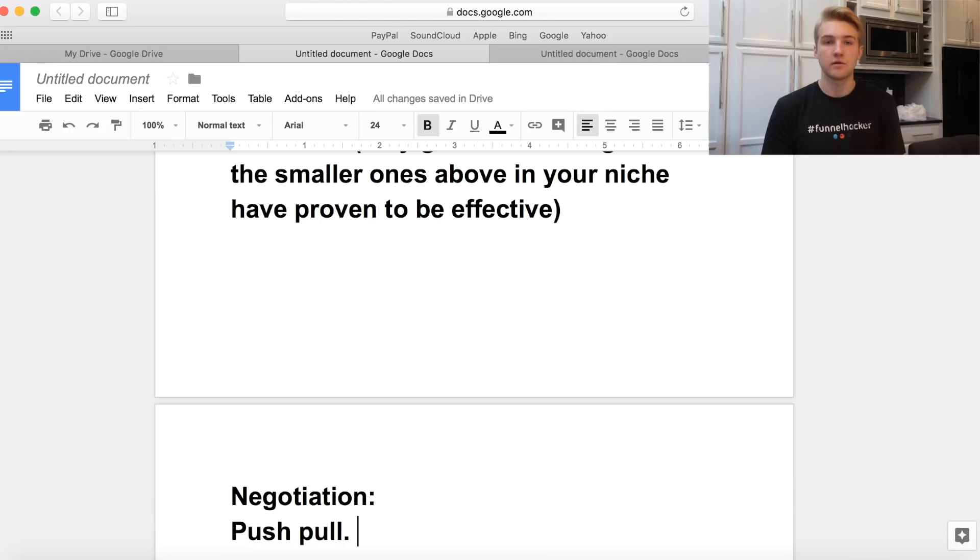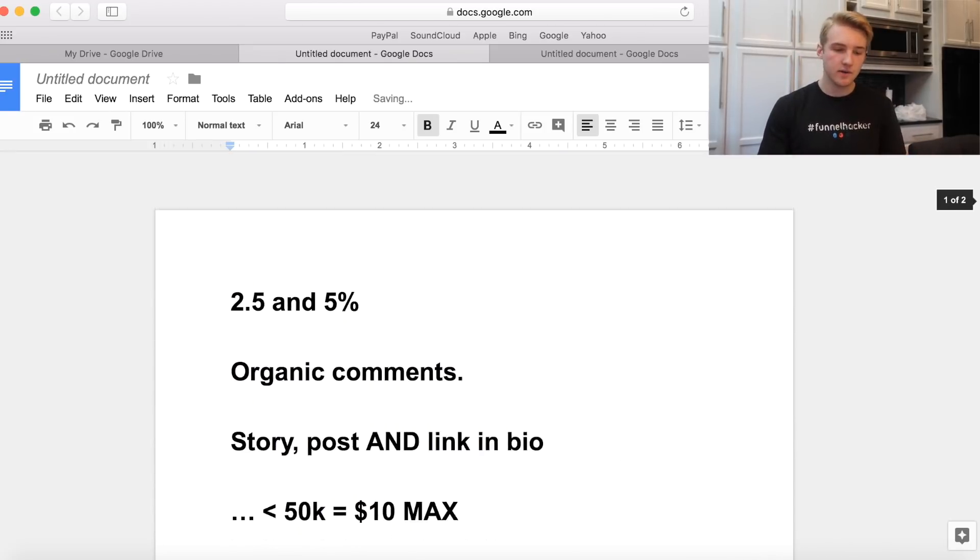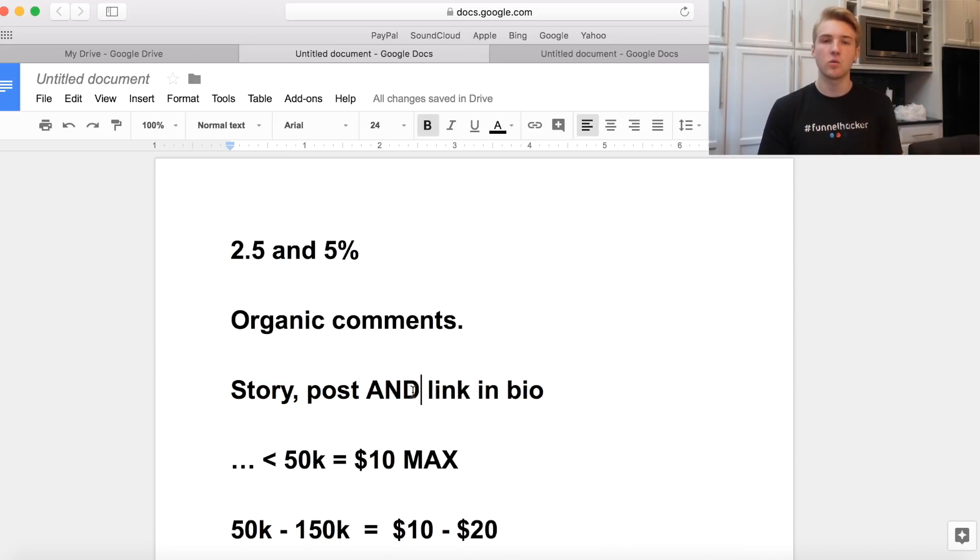I call it the push pull. Let's say an influencer charges 30 bucks for a shoutout. I'm going to tell them, look, we're looking to build another list of influencers we want to work with long-term. We usually pay 15 bucks, half their price, for this shoutout on a page of your size and engagement. But we can offer you 25 for this if we get a regular post, a story post, and a link in bio. You threw off the balance. They perceive other pages my size are giving them shouts for 15 bucks. You barely undercut them by five bucks but got all three.